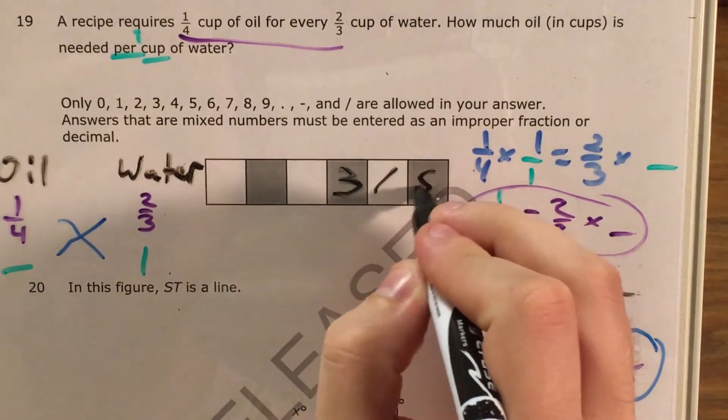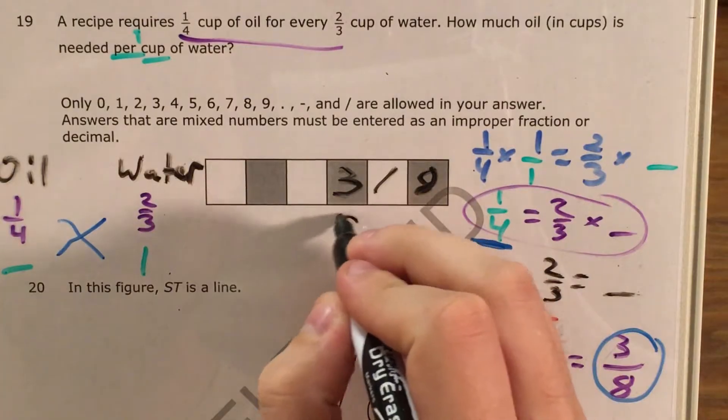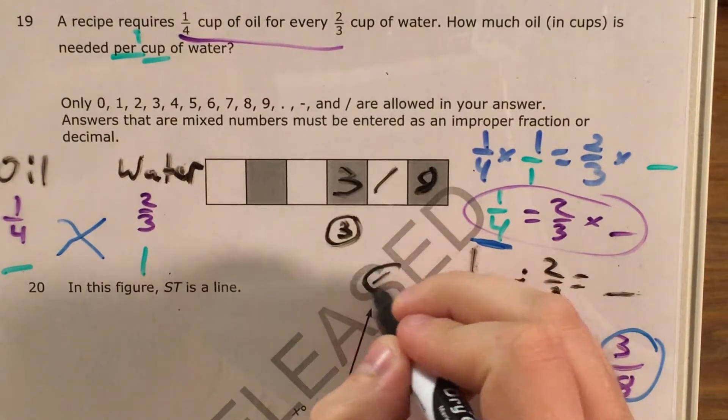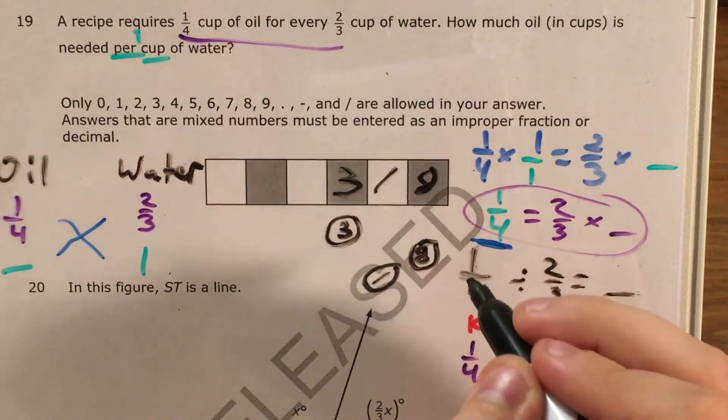So now that I know my answer is three-eighths, there are two ways I can write this. I can do three slash eight, find my three bubble, find my slash bubble, and find my eight bubble.